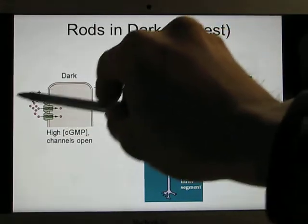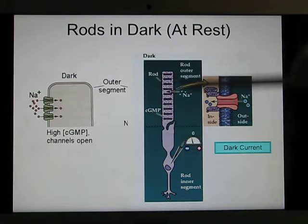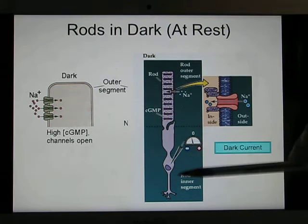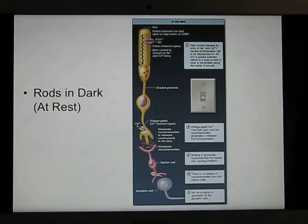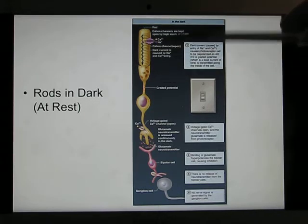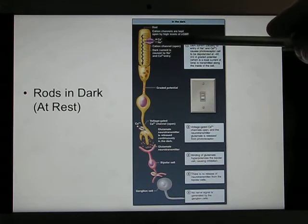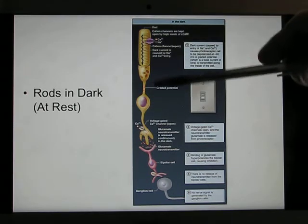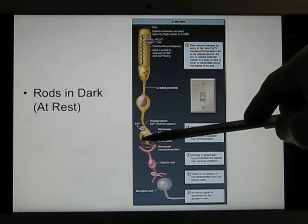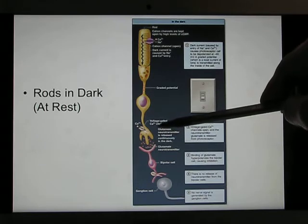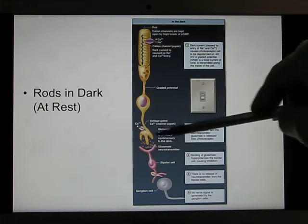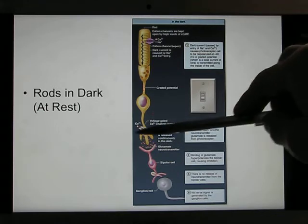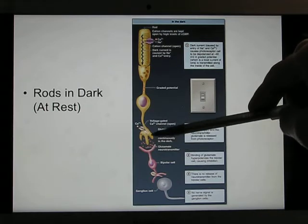When there is no light, ion channels are open, sodium flows in because sodium is high outside and low inside, and the inside becomes depolarized. This is called the dark current. So when there's no light, rods and cones are heavily depolarized, voltage-gated calcium channels open, calcium flows in, and a lot of neurotransmitter is released. This is totally the opposite of what we normally learned.